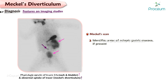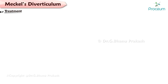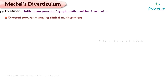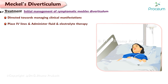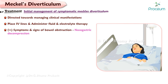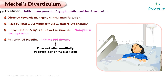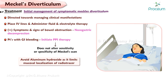Meckel's Scan identifies areas of ectopic gastric mucosa, if present. Treatment — initial management of symptomatic Meckel's Diverticulum is directed toward managing the clinical manifestations. Intravenous lines should be placed and fluid and electrolyte therapy administered as needed. Patients with bowel obstruction may require nasogastric decompression. Patients with gastrointestinal bleeding should be initiated on proton pump inhibitor therapy; PPI use does not alter the sensitivity or specificity of a Meckel's scan. Aluminum hydroxide should be avoided because it limits the mucosal localization of radiotracer.